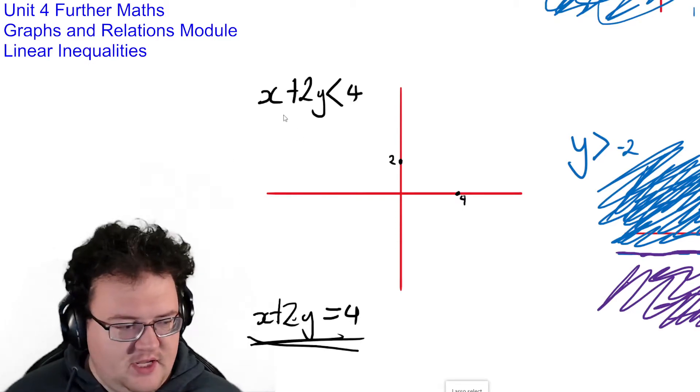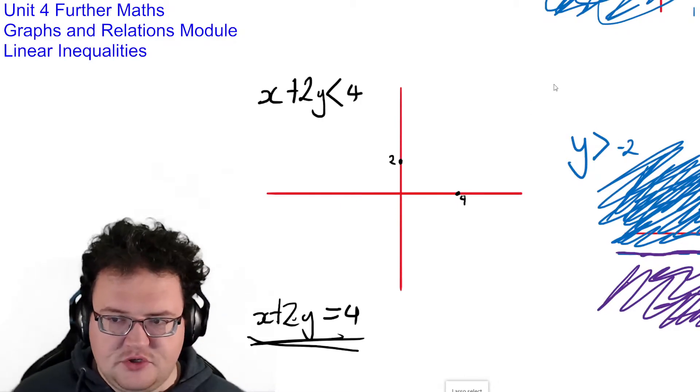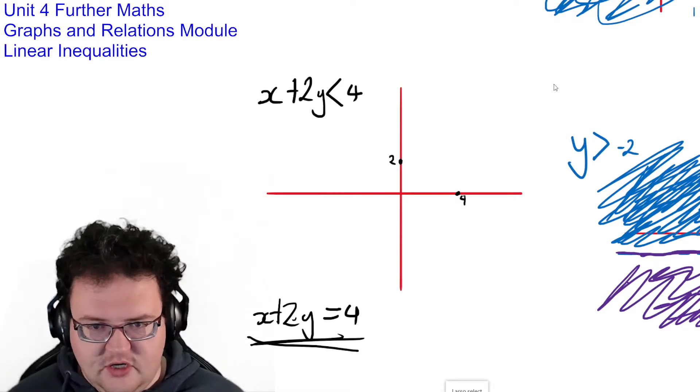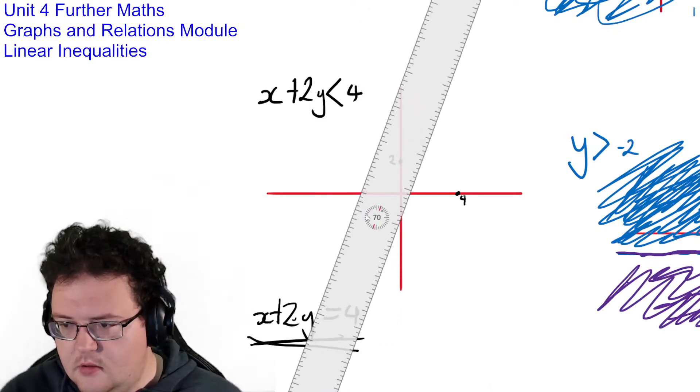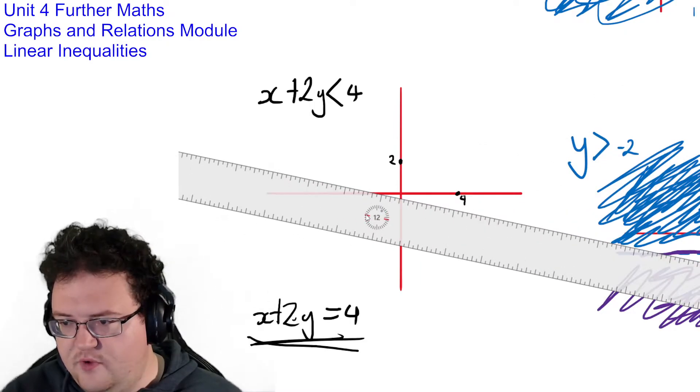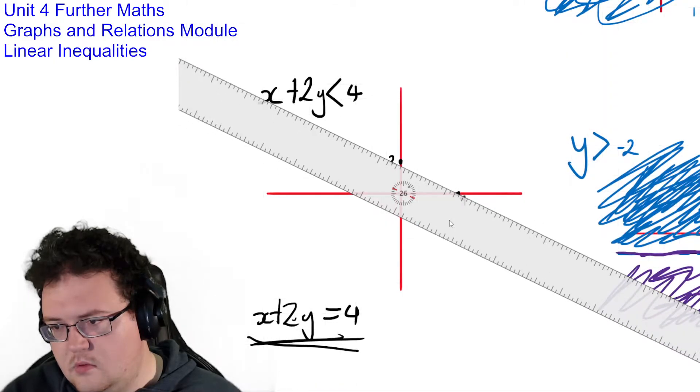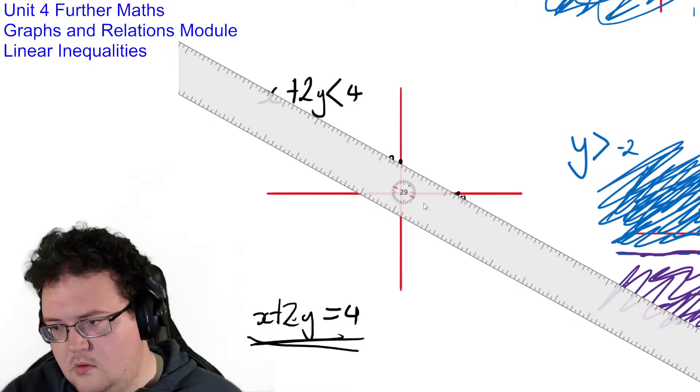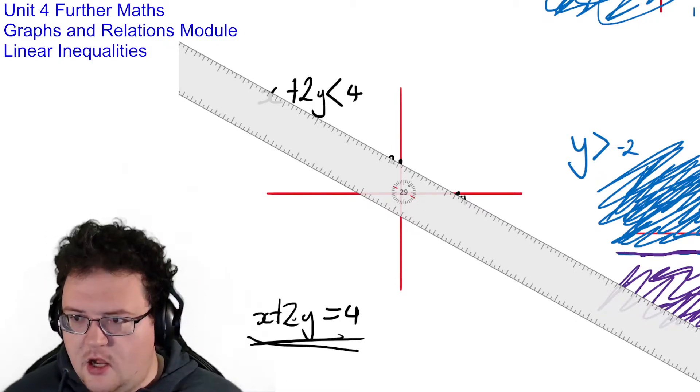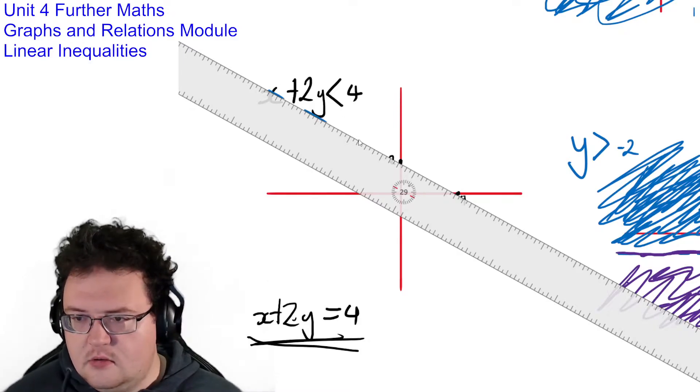But the only difference between this one and this one up here is the less than symbol. Now as I've been doing in all the other ones that you've seen before, if I'm using a less than and not equal to sign, I can draw the line with a dotted line. So what I'm going to do is I'm going to line my ruler up with these points here. And I'm going to draw my line in. But of course, because it's a less than symbol, I'm going to draw in a dotted line.